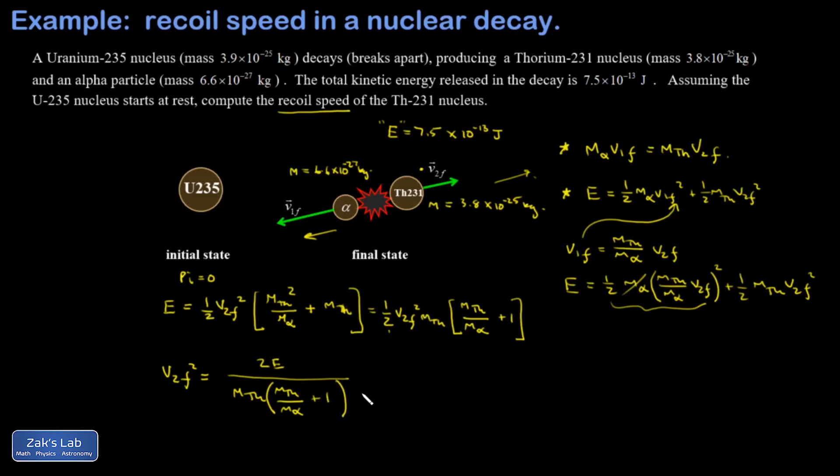I'm trying to think of ways to clean this up a little bit. I suppose that I could multiply the numerator and denominator by M alpha. I get 2E M alpha over M thorium. And when I distribute the M alpha into the parentheses, I get M thorium plus M alpha. So it has a little better symmetry to it.